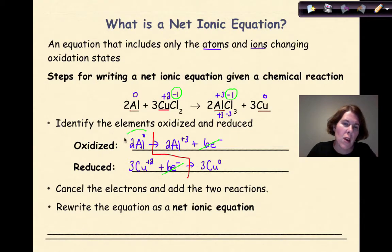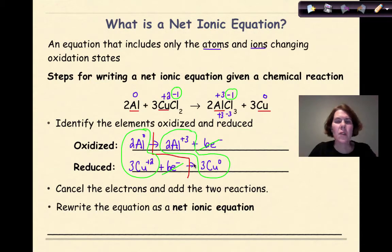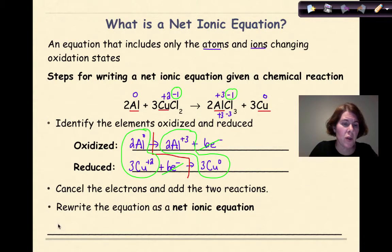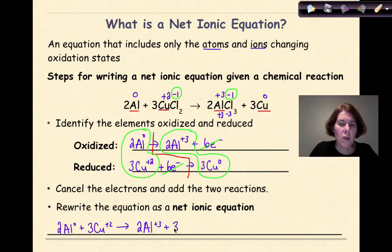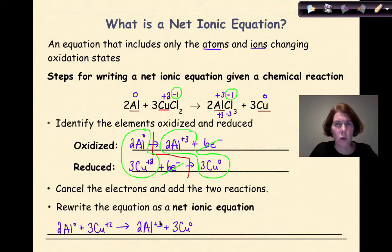Finally, I'm left with two species on the reactant side and two species on the product side. Those are the things that are going to be involved in my net ionic equation. When I rewrite this, that's all I'm going to be including. So I'm going to put two Al zero plus three Cu plus two yields two Al plus three Cu zero. And that is my net ionic equation — it's just showing what's being oxidized and what's being reduced.